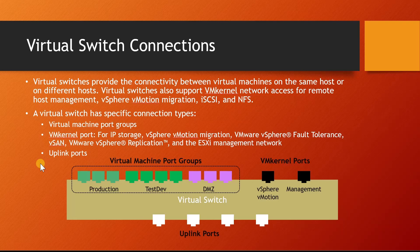A standard switch has to be connected to the ESXi host's physical network adapter, which we call uplink ports. These uplink ports communicate with the rest of the network. They are configured at the host level, meaning you must create and manage vSphere standard switches independently on each and every host machine. By default, when you install and configure an ESXi host, it comes with one virtual switch called vSwitch0.